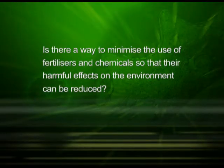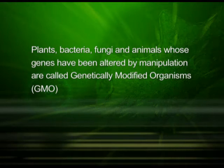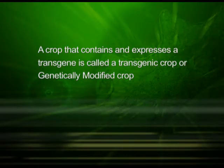We should think about what is the alternative path through which our farmers may obtain maximum yield from their fields and is there a way to minimize the use of fertilizers and chemicals, so that their harmful effects on the environment can be reduced. The possible answer to these questions is the use of genetically modified crops. Plants, bacteria, fungi and animals whose genes have been altered by manipulation are called genetically modified organisms or GMOs. A crop that contains and expresses a transgene is called a transgenic crop or genetically modified crop.